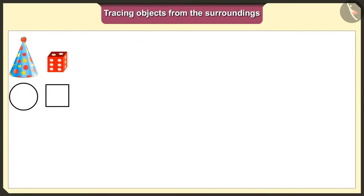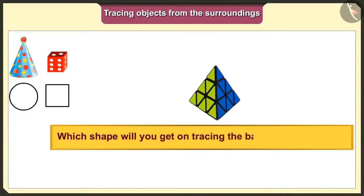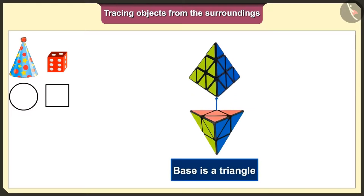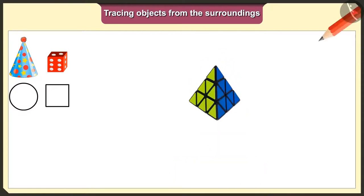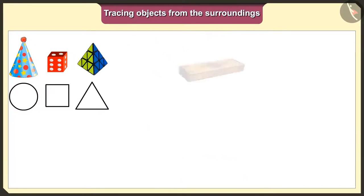Now let's see which shape we would get when we trace this pyramid shaped toy. The base of this toy is a triangle, so we will get a triangle shape when we trace it.